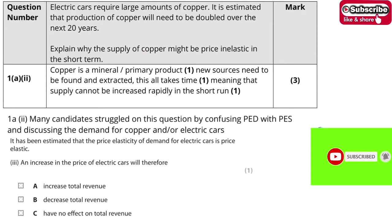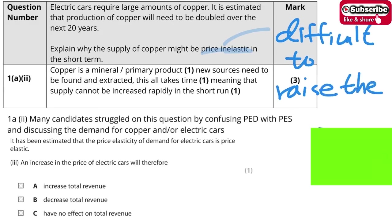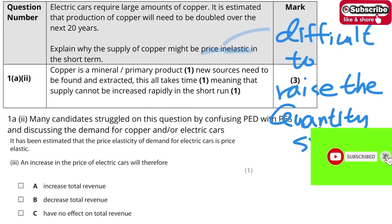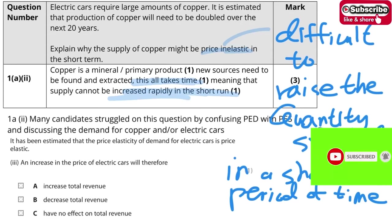A2 is about why the supply of copper would be price inelastic — it is difficult to raise the quantity supplied in a short period of time. In the textbook, it talks about supply not being responsive to price changes. The reason is that it takes time to increase the supply in the short run. In your explanation, you have to talk about why — for example, it is difficult to find and extract copper. The exam report notes students struggle to distinguish between PED (price elasticity of demand) and PES (price elasticity of supply). This question is about PES — the supply — not PED.